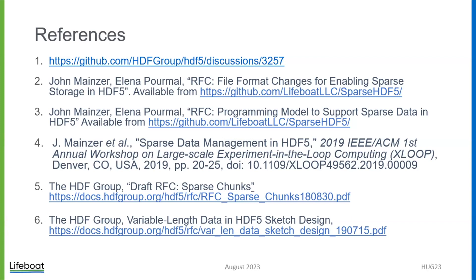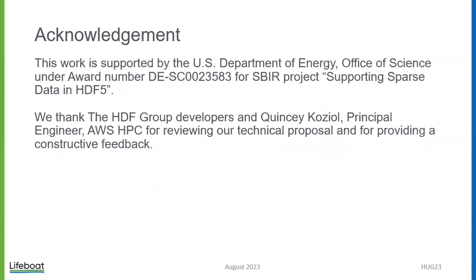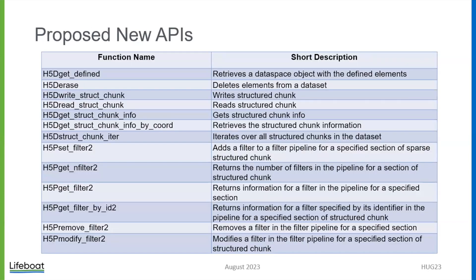Question: If you use just H5Dwrite, will it create a structured chunk with the locations of the elements you are writing and with the values of those elements? What's the difference between that and H5Dwrite_structured_chunk? Answer: That API is for direct chunk write. H5Dwrite_structured_chunk — those are new APIs to write direct structured chunks. It is up to the user in user space to construct and provide all buffers and all information, and we will write that structured chunk directly, bypassing the HDF5 IO pipeline.